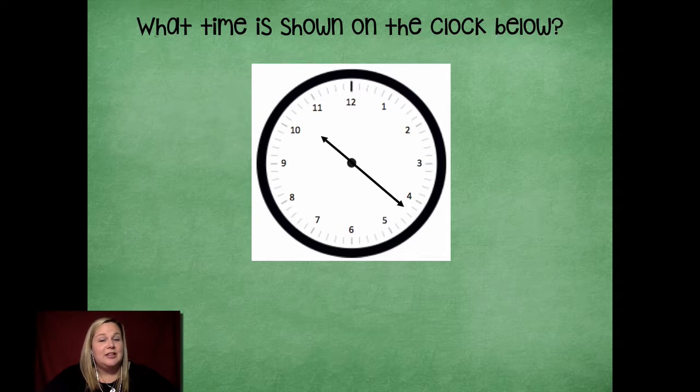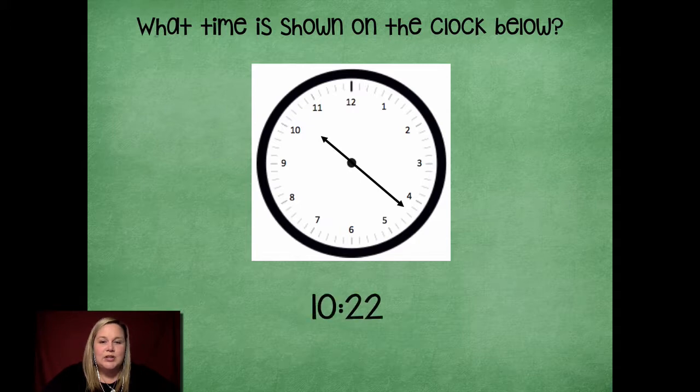All right. So what time is shown on this clock? Okay, here we go. 10:22. The hour hand is pretty much in the middle between 10 and 11 o'clock. And then our minute hand, silly Mrs. Walker, our minute hand is just past the four, which represents 20. So we would be at 20, 21, 22.